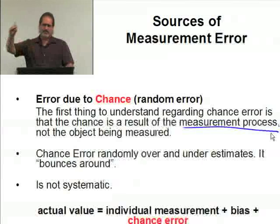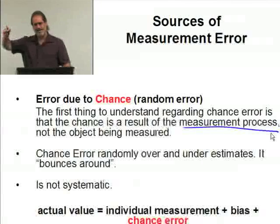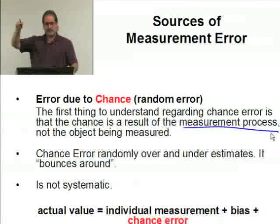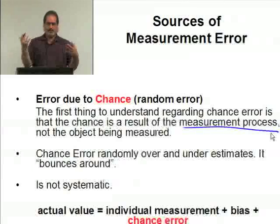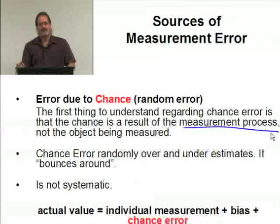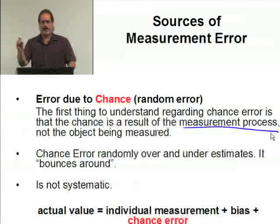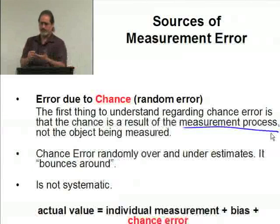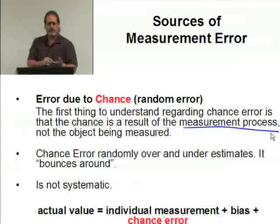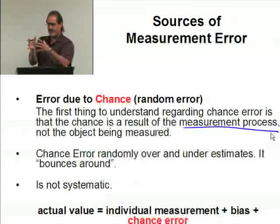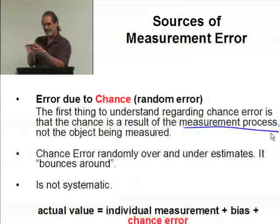Well, when you go out on campus and you take your survey, if you avoid that particular group because you have this personal racial prejudice, that's producing a bias because you're systematically eliminating that particular group. That is a result of what's being measured, not the process. The process is simply you walk up to somebody and ask them questions off your survey. But because of what you're measuring and your particular bias toward a particular ethnic group, you're creating a bias in your sample.